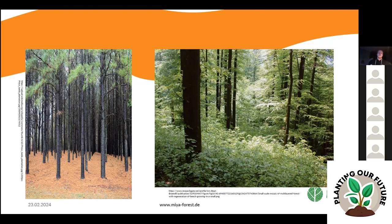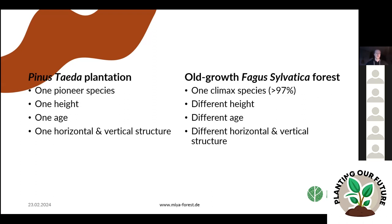The left-hand forest has one height, one pioneer species, one age, and one horizontal and vertical structure — or rather no structure, just one level. The right-hand side is very different. When we try to look at the structure in a more schematic way, we can see that clearly.